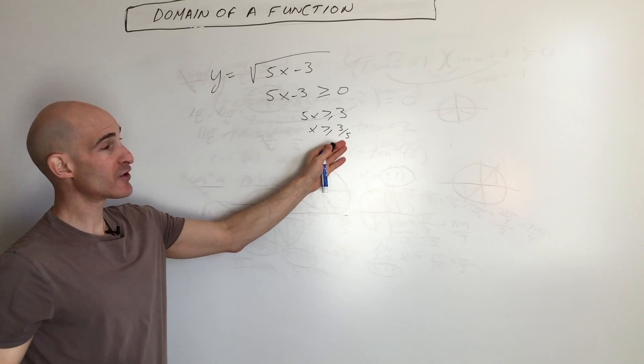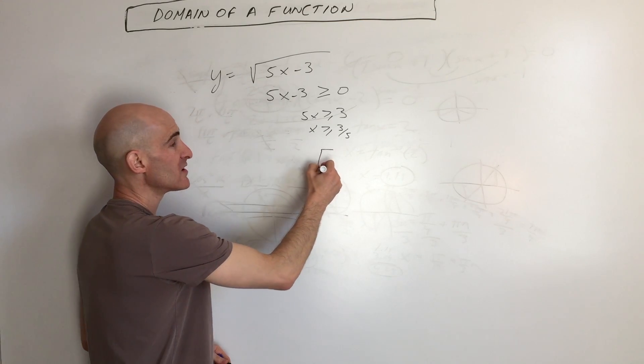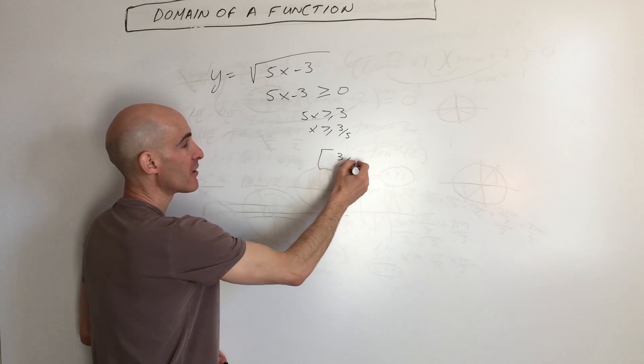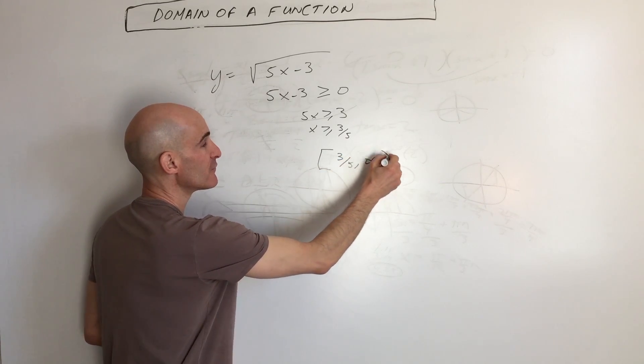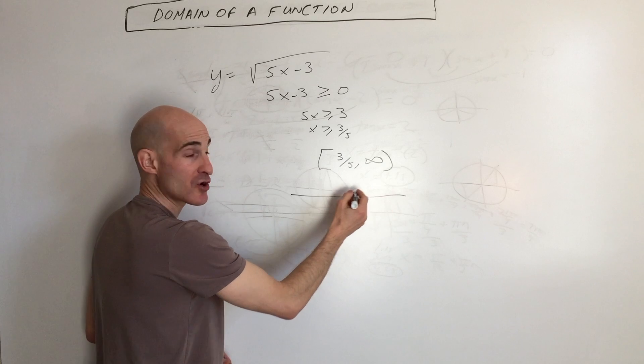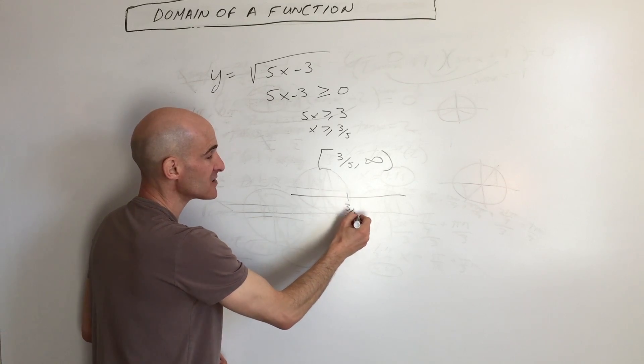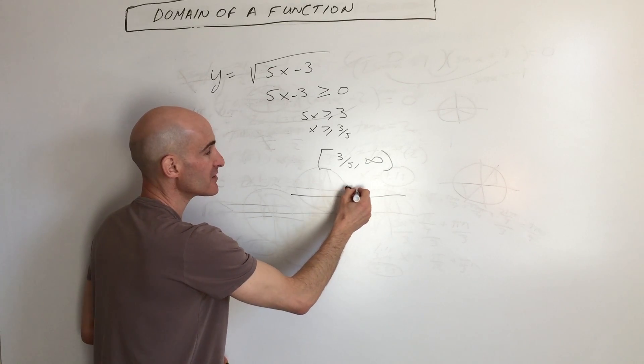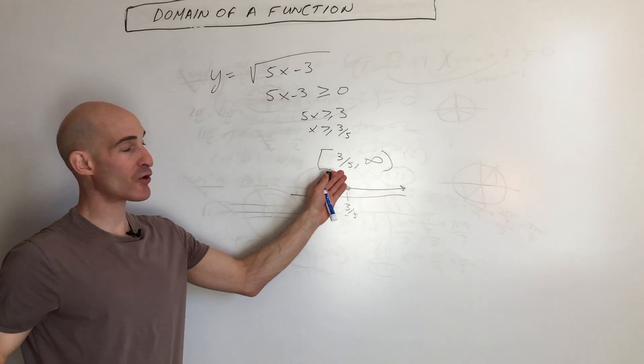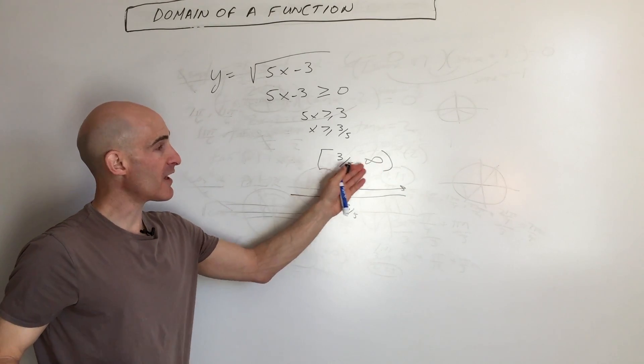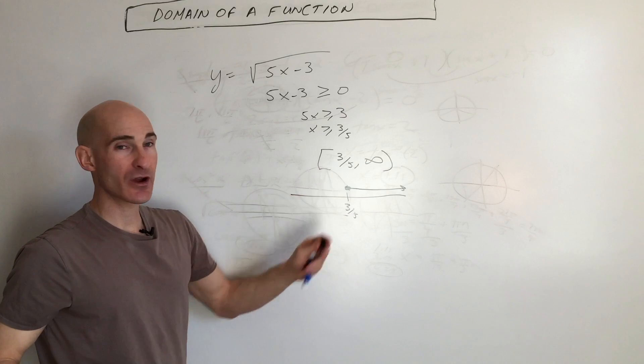So it's all real numbers that are greater than or equal to 3 fifths. Or if you want to use the interval notation, 3 fifths to infinity. Sometimes I like to draw this on the number line just to visualize it. So 3 fifths, including 3 fifths, to infinity. So we think about going from low to high or left to right. And we can write our interval that way.